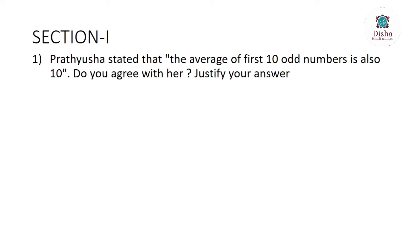Pratyusha stated that the average of the first 10 odd numbers is also 10. Do you agree with her? Justify your answer. Pratyusha is stating that the average of the first 10 odd numbers — that is, numbers not multiples of 2, like 1, 3, 5, 7 — is 10.